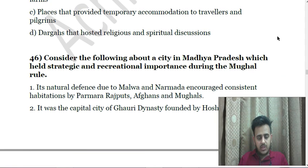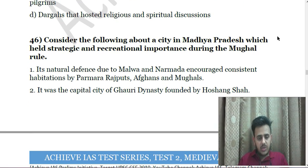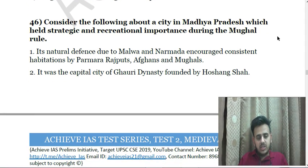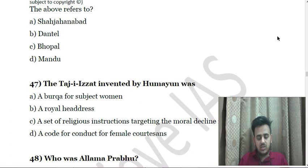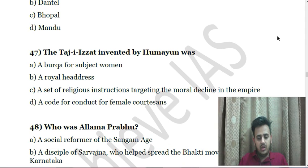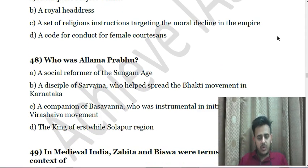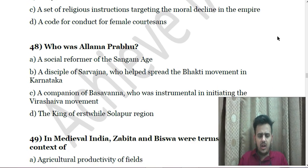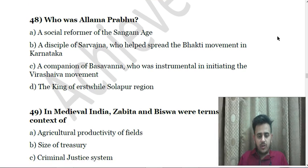Next: Consider the following about a city in Madhya Pradesh which held strategic and recreational importance during Mughal rule — First, its natural defense due to Malwa and Narmada encouraged consistent habitation by Paramara Rajputs, Ghurids, and Mughals; Second, it was the capital city of Ghori dynasty founded by Hoshang Shah. Next: The Taj-e-Izzat invented by Humayun was — A. A burqa of a subject woman; B. A royal headdress; C. A set of religious instructions targeting moral decline in the empire; D. A code of conduct for female courtesans.